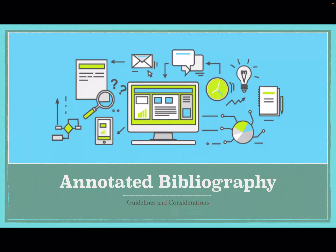There are two kinds of annotations: descriptive and evaluative. A descriptive annotation just summarizes the content of a work, but an evaluative bibliography describes and offers opinions on the source. This is the type of annotated bibliography that we'll be working on for our assignment.